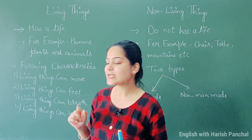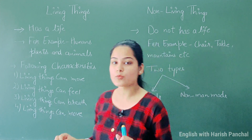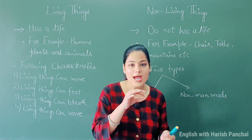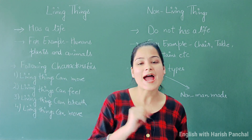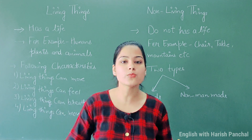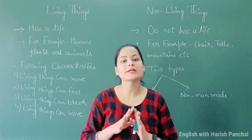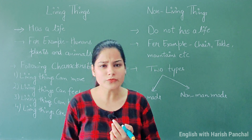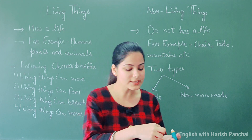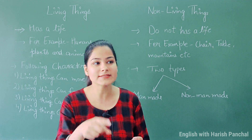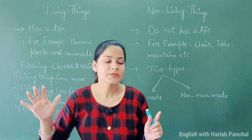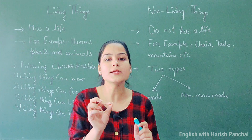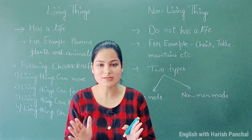Living things can move. We can walk, run, and jump from one place to another. An elephant can move from one part to another, a rat can run in a room, and ants can walk. Even plants can show movement — creepers and climbers show movement as they grow and spread from one place to another.